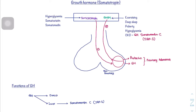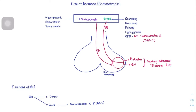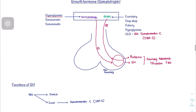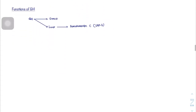When pituitary adenoma occurs, you have symptoms of high prolactin and high growth hormone. States of hyperglycemia — high blood sugar — and excess somatomedin in the blood will act as negative feedback to inhibit release of growth hormone by increasing synthesis of somatostatin. There are pharmaceutical somatostatin analogues, such as octreotide, which also cause inhibition of growth hormone release.